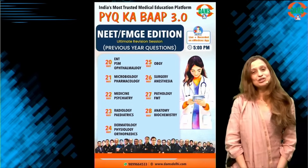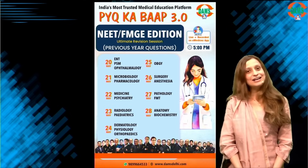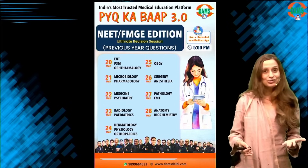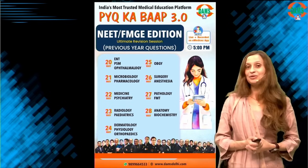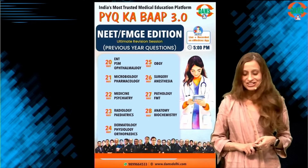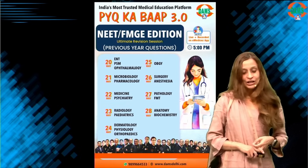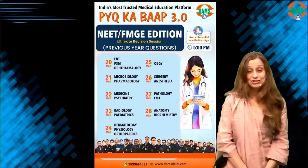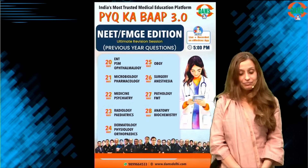We are going to spread it over a span of a week to ensure consistency while students can also maintain their own study plans. On 20th we will have ENT, PSM, and Ophthalmology. 21st — Microbiology and Pharmacology. 22nd — Medicine and Psychiatry. 23rd — Radiology and Pediatrics. 24th — Dermatology, Physiology, and Orthopedics. 25th — Obs and Gynae, covering both Obstetrics and Gynecology. 26th — Surgery and Anesthesia. 27th — Pathology and FMT.